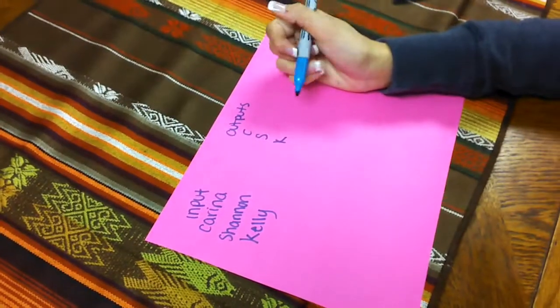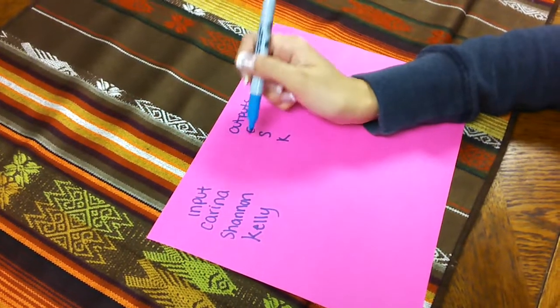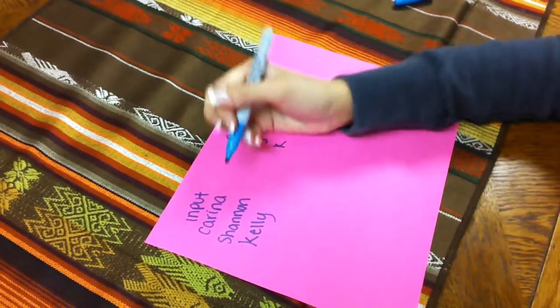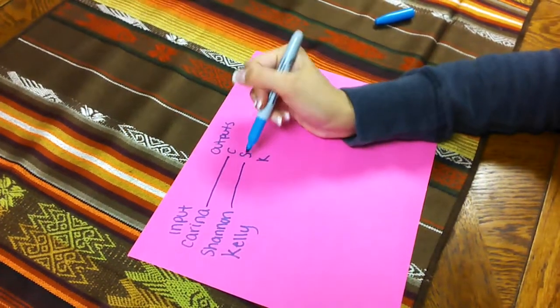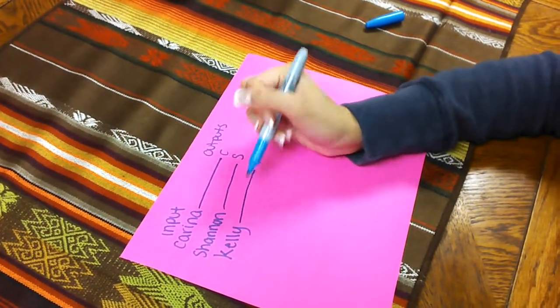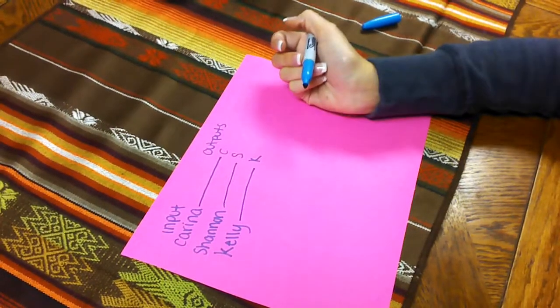So for something to be a function, it has to have one output for every input. So one, one, one. So that's perfectly a function.